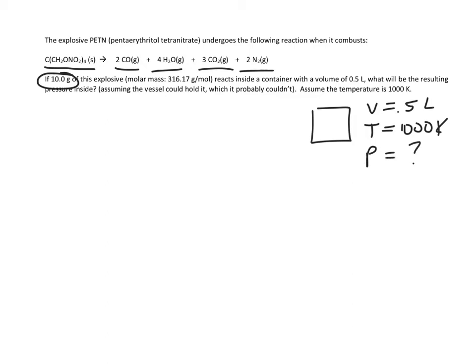From the ideal gas law, we know in order to find the pressure, we have to first find the moles. How many moles of gas are going to be present? So we have 10 grams of this explosive, which I'm just going to abbreviate PETN. And I've given the molar mass here, so we can quickly figure out how many moles of the explosive there are. So 10 divided by that number, 316.17, and I get that there were 0.0316 moles of the PETN.